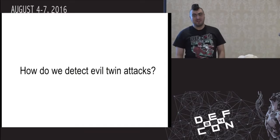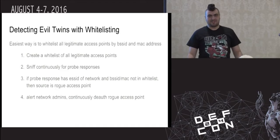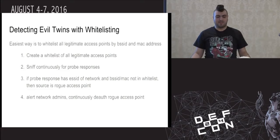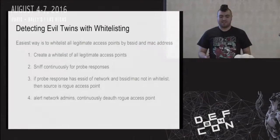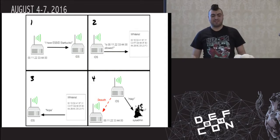So how do we detect evil twin attacks? Well, we can use whitelisting. The standard way to do this is to keep an inventory of what access points belong to your network. So if you have a BSSID that is not on your whitelist, then at that point you know that something shady is going on. For example, if some device is claiming to have a BSSID for Starbucks and your IDS system picks this up and checks the whitelist and it's not there, you just take action accordingly.